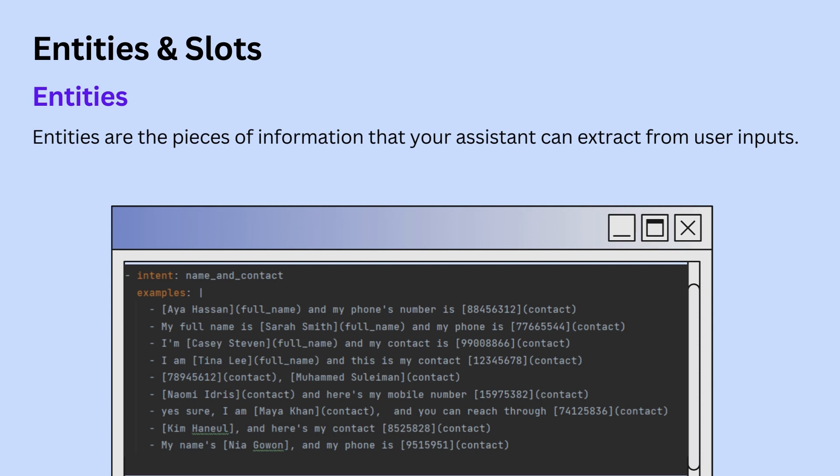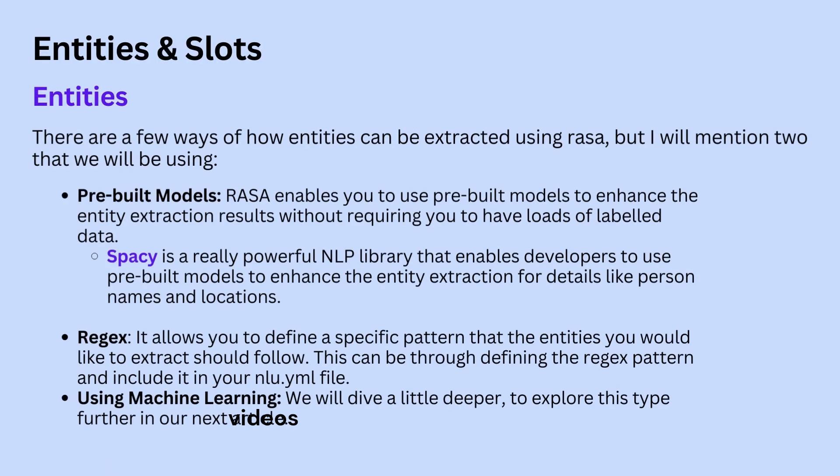There are a few ways to teach the chatbot to extract entities. The first is through pre-built models: Rasa lets you use pre-built models to enhance entity extraction without requiring large amounts of labeled data. spaCy is a powerful NLP library with pre-built models for details like names and locations. Regex, on the other hand, lets you define a specific pattern that entities should follow — making it the best approach for entities like user IDs, emails, or phone numbers. To use regex, define the pattern and include it in your nlu.yml file.